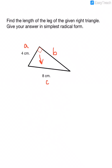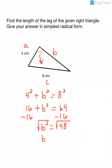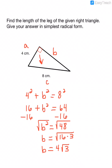We're going to look for B. Plugging into the Pythagorean Theorem: A squared, so in this case 4 squared, plus B squared equals C squared, which is 8 squared. 4 squared is 16, plus B squared equals 8 squared which is 64. I'm going to subtract 16 from both sides, and that gives me B squared equals 48. Then I take the square root. The biggest perfect square in 48 is 16. 16 times 3 is 48, so the 16 comes out as a 4, and the 3 stays under. So the answer in simplest radical form is 4 square root of 3 centimeters.